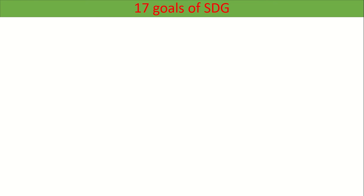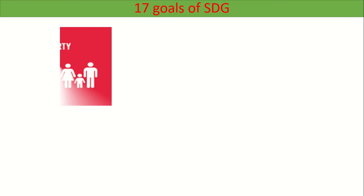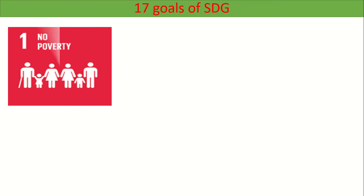I will briefly discuss the SDG goals. In Standard 7 I have already discussed all 17 goals elaborately. So these are: Goal 1 — No Poverty.